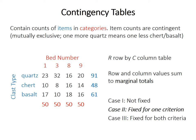Marginal totals can take on three different cases. In case one, neither marginal total is fixed prior to the study. Most often you'll encounter case two, when one of the marginal totals — either the rows or the columns — is fixed prior to collecting the data. In this hypothetical situation, we chose to count 50 rocks from each bed, so the column marginals are fixed at 50. However, we didn't know how many quartz, chert, or basalt rocks we would find. In case three, both row and column marginal totals are fixed beforehand, which is hard to do outside of experiments and not common in observational earth science data.